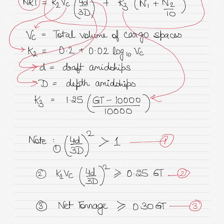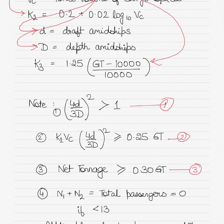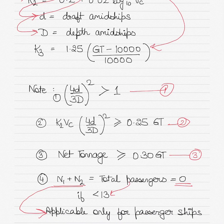Now if you remember, I didn't explain what N1 plus N2 is in the above formula. Remember, N1 plus N2 is applicable only for passenger ships, and this value will be 0 if the passengers are less than 13. So that refers to total number of passengers being carried on that vessel.